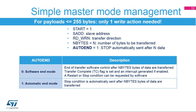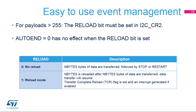After the programmed number of bytes is transferred, the transfer complete, or TC flag, is set and an interrupt is generated if enabled. Then a repeated start or a stop condition can be requested by software. The data transfer can be managed by interrupts or by the DMA. When the payload is greater than 255 bytes, the reload bit must be set in I2C control register 2. In this case, the transfer complete reload, or TCR flag, is set after the programmed number of bytes has been transferred. The additional number of bytes to be transferred is programmed when the TCR bit is set, and then the data transfer will resume. The I2C clock is stretched low as long as TCR is set. The reload bit is used in master mode when the payload is greater than 255 bytes, and in slave mode when slave byte control is enabled. When the reload bit is set, the auto-end bit has no effect.